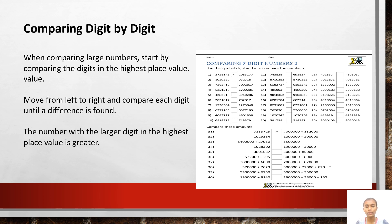There are two rules for comparing large numbers. Rule number 1: a number with more digits is always greater than a number with fewer digits. Rule number 2: when two numbers have the same number of digits, we start comparing digits from the leftmost place until we come across unique digits.